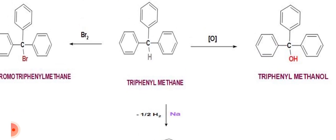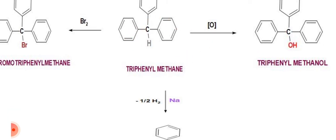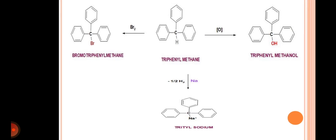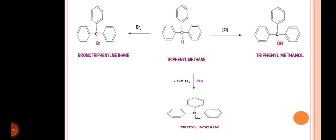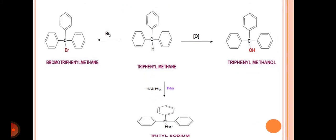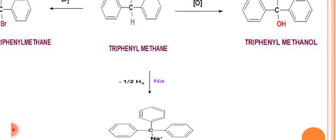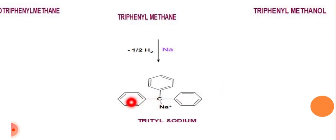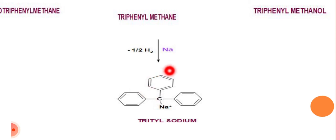The last reaction is the reaction of triphenylmethane with sodium. Triphenylmethane is an acidic compound, so it reacts with metals like sodium to give the formation of trityl sodium, with the liberation of hydrogen gas. This is the familiar reaction of sodium with acidic compounds — whenever sodium reacts with an acidic compound, hydrogen gas is liberated.